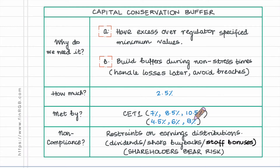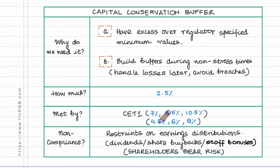Total capital should be at least eight percent of risk weighted assets. If we bring in this additional requirement, the minimum levels of these ratios respectively become seven percent, eight and a half percent, and ten point five percent.